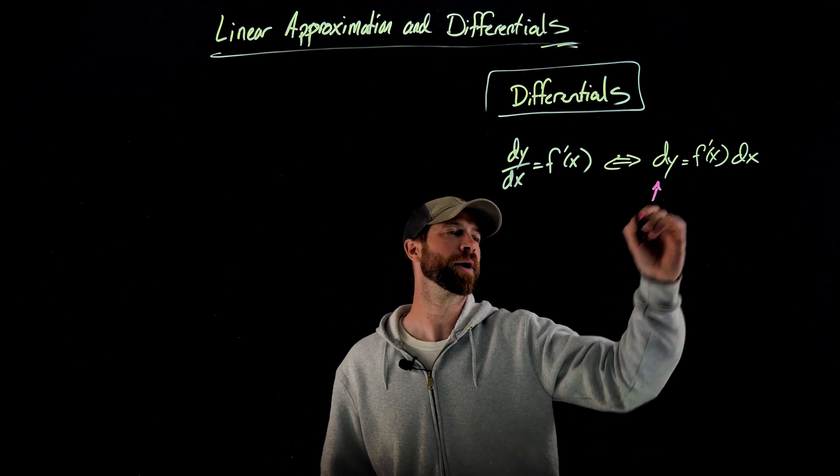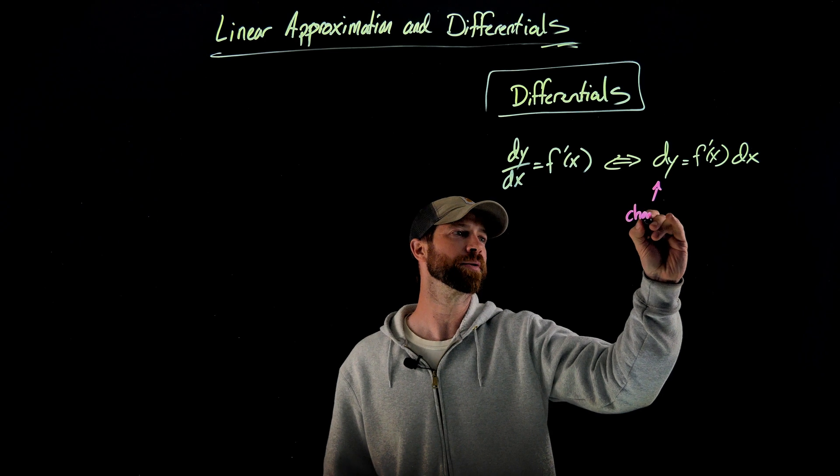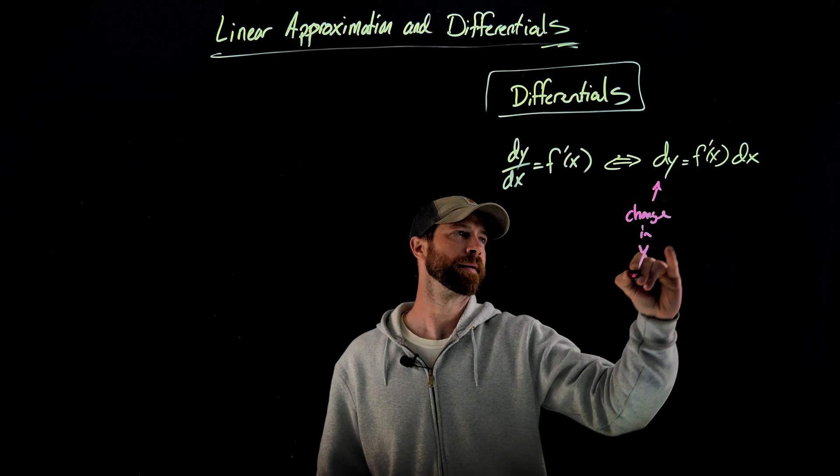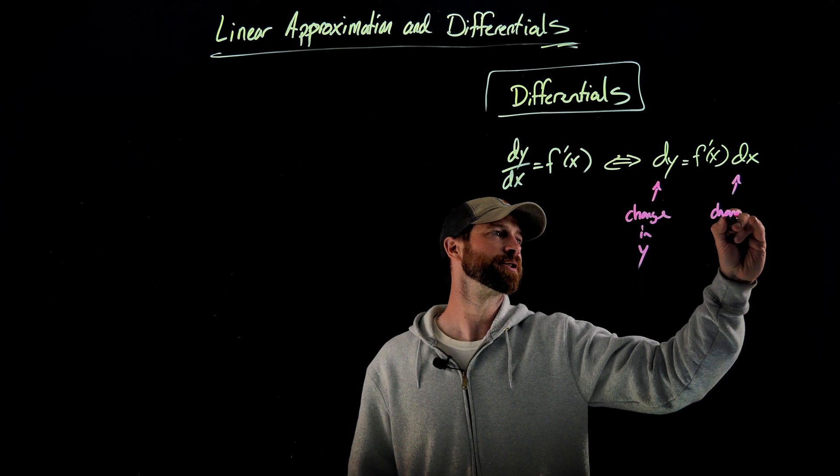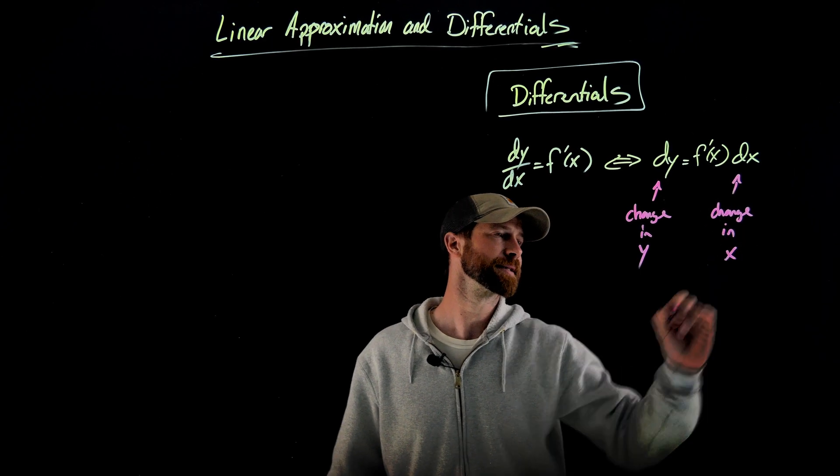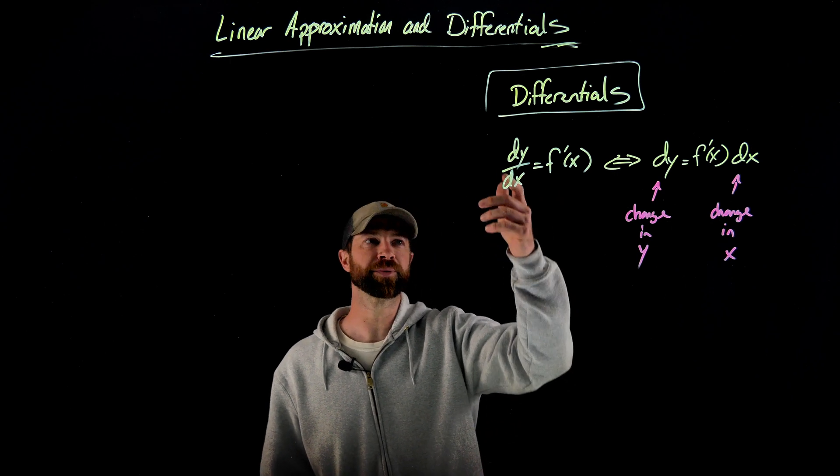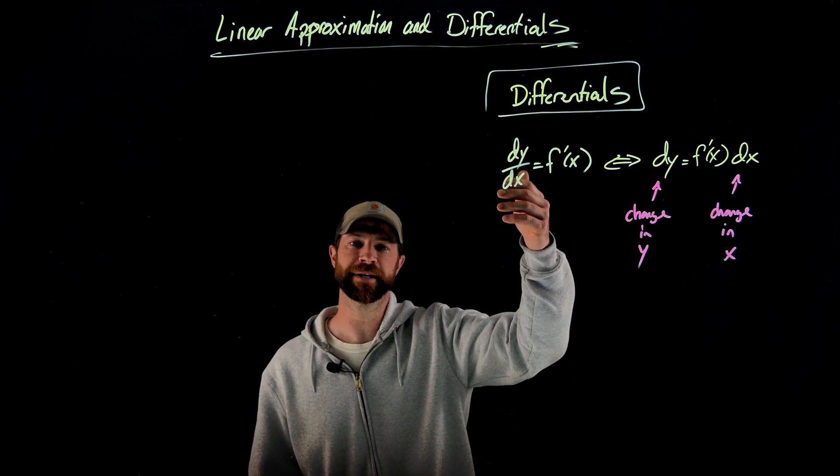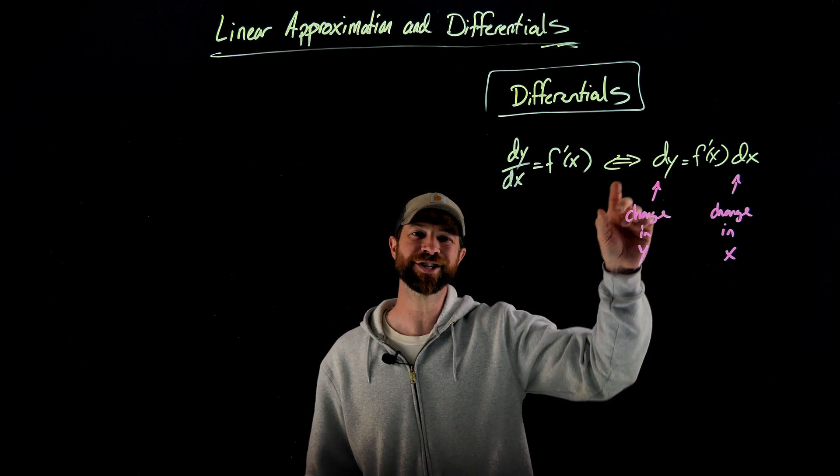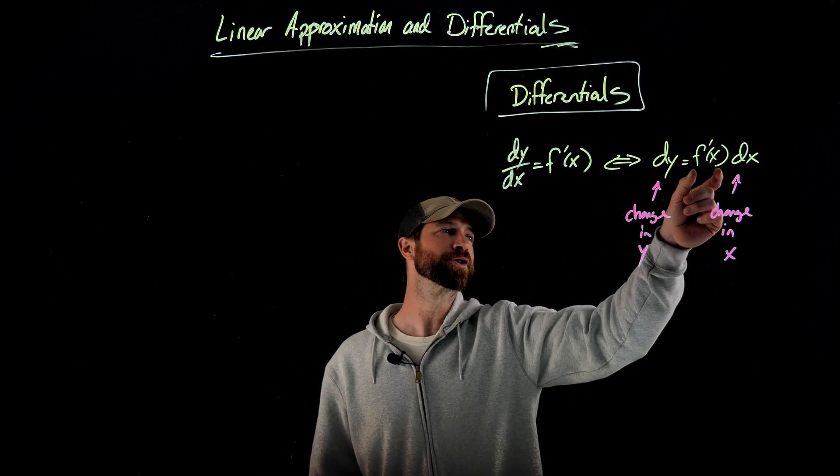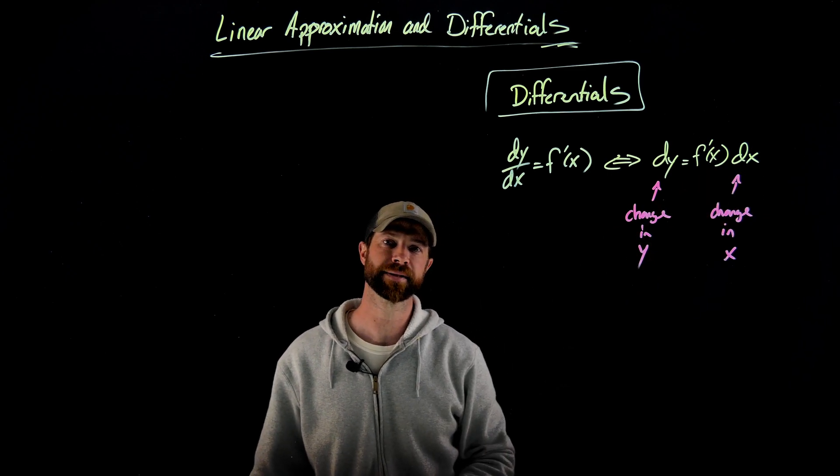This differential dy right here is talking about an infinitesimally small change in y, and dx here is talking about an infinitesimally small change in x. Again, in this form, this is a rate because we're dividing these changes from each other. Over here, it's not a rate. We're saying we can find the change in y if we multiply the derivative of the function times the small change in x.